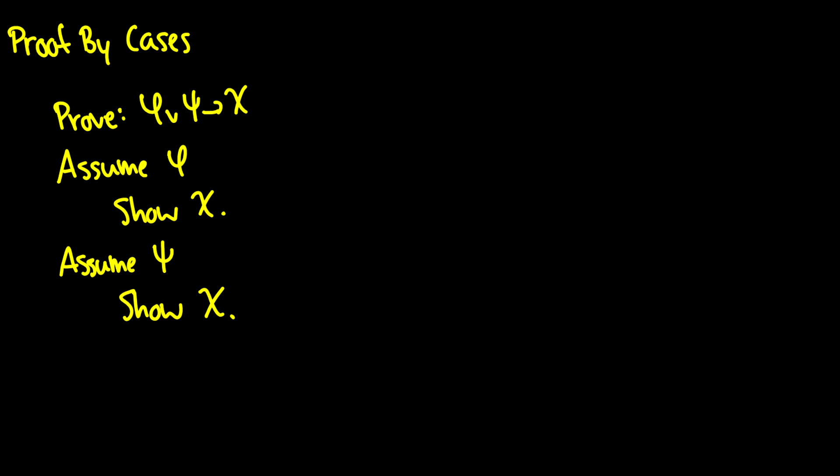I decided to do an actual video on proof by cases and have an example that works. A proof by case is if we say that phi or psi proves chi, then what we have to do is assume phi and show that chi, and then assume psi and show that chi, and then that proves chi.